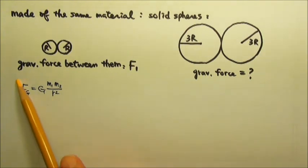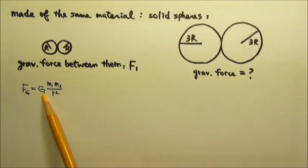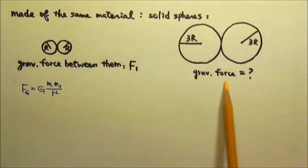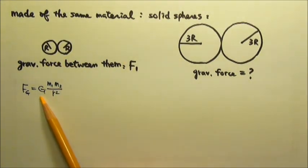To find the gravitational force between two pieces of mass, we use Newton's law of gravitation: G M1 M2 over R squared. Comparing this scenario to that one, we have G, which is always the same.